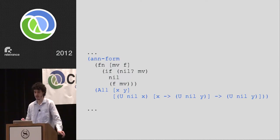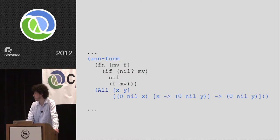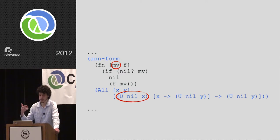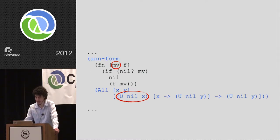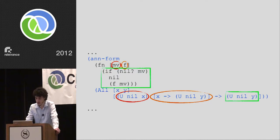Here's some code from algo-monads — the m-bind of the maybe monad — which is an interesting case of using unions and function types. It's a function that takes two arguments. The type of the first argument is either nil or X, where X is a universally quantified type variable. So we read 'all X Y' as 'for all types X and Y.' mv is a union of X or nil, and f is a higher-order function that takes X and returns a union of nil and Y. Then the return type is either nil or Y.